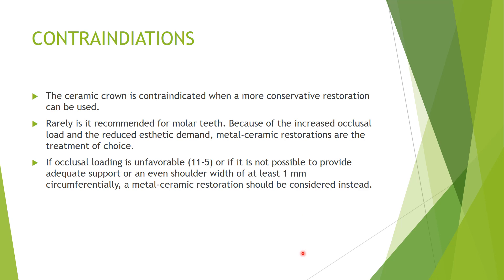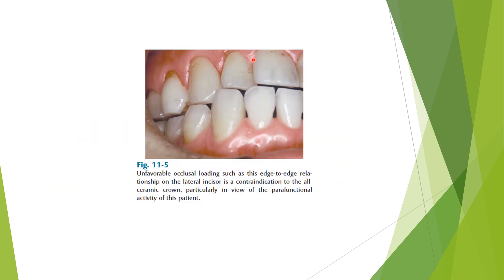Contraindications: all-ceramic crowns are contraindicated when a more conservative restoration can be used, such as a composite veneer or PFM. It is rarely recommended for molar teeth because of increased occlusal load and reduced aesthetic demand — a metal-ceramic restoration is the treatment of choice for molars. If occlusal loading is unfavorable, or if it is not possible to provide adequate support or an even shoulder width of 1 mm circumferentially, a metal-ceramic restoration should be done instead. Edge-to-edge occlusion is contraindicated, and parafunctional habit patients will fracture the restoration.